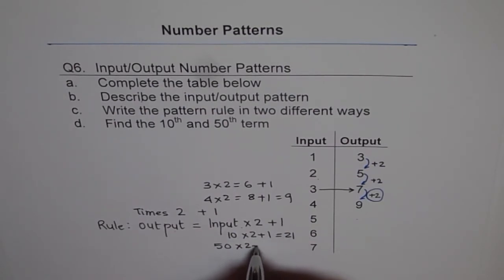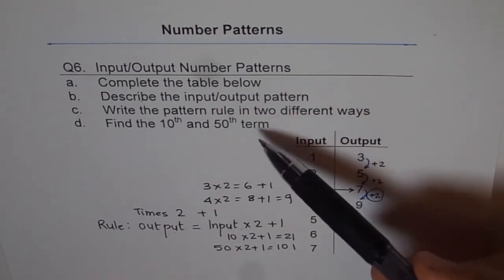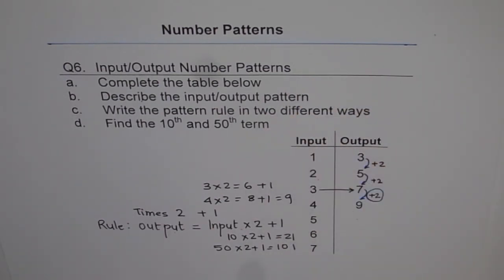50 times 2 plus 1. 50 times 2 is 100. 100 plus 1, 101. So we get both our answers. So I like you to now answer each question yourself in a nice way. Thank you and all the best.